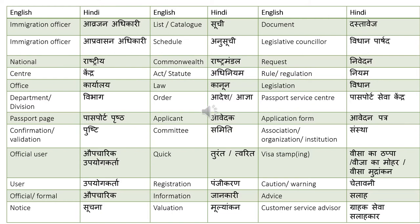Law — kanun. Order — adesh, athwa agya. For example, 'He gave an order' can be translated as 'Unhone adesh diya' or 'Unhone agya di'.